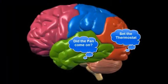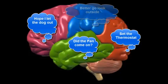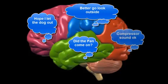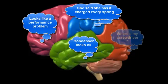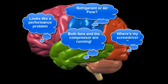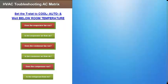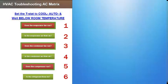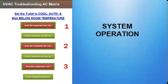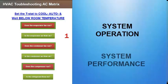If it were possible to hear everything that goes on inside a technician's brain during diagnostics, we would quickly discover that successful technicians carry with them a mental roadmap of the basic diagnostic process. They are constantly looking and listening for clues that will lead them to system problems as quickly and directly as possible. Once the technician sets the thermostat to cool, auto, and well below room temperature, successful technicians begin by asking themselves six very basic questions — three questions about system operation, and three questions about system performance.